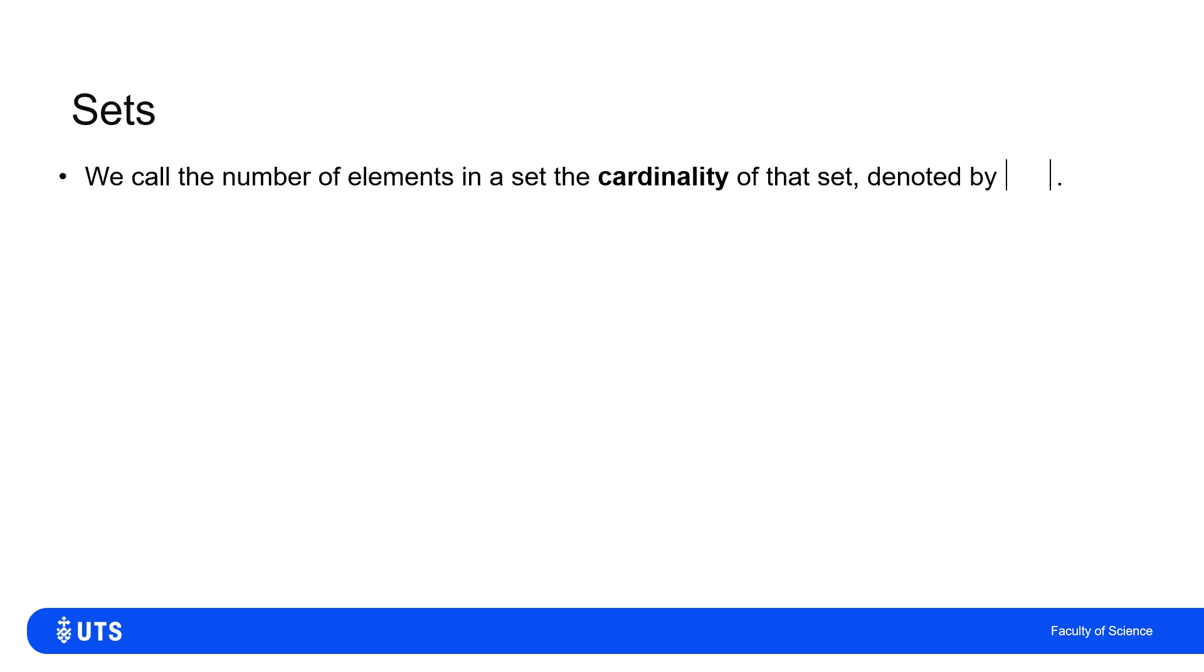The usual way to denote the cardinality of a set is by these parallel vertical lines. So the same sort of notation you may have seen to denote the absolute value of a number. So in our previous example, the set containing {1, 2, 1, 3, 2, 3, 4} has cardinality four because there's four distinct elements in that set. I don't count one twice, I don't count two twice, I say there's four distinct elements, so the cardinality of the set A is four.